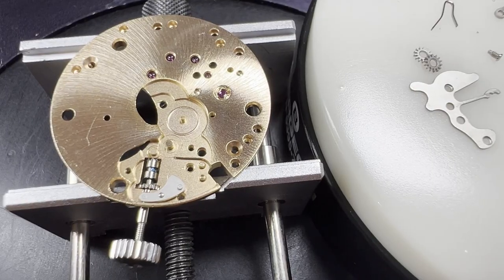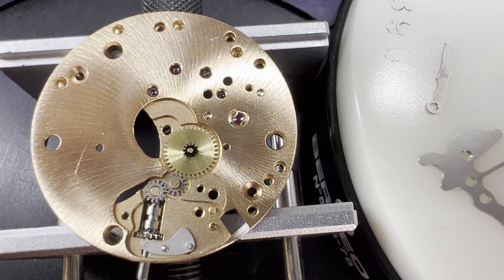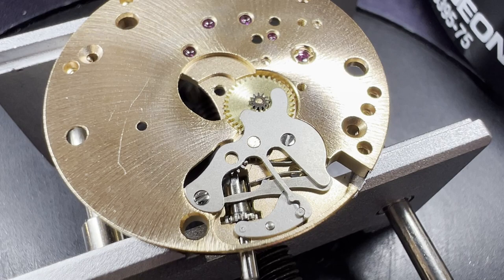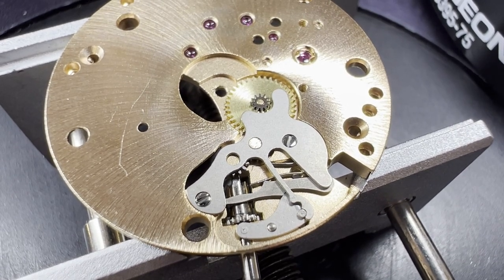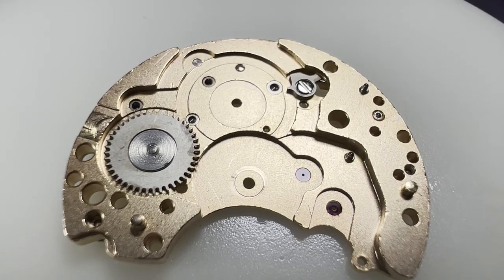Setting lever, crown, stem, winding pinion and sliding pinion, intermediate wheels and minute wheel, yoke and yoke spring. And before the yoke spring flies off, we get the setting lever screwed down. Then we reassemble the click works and crown wheel on the back of the train wheel bridge.